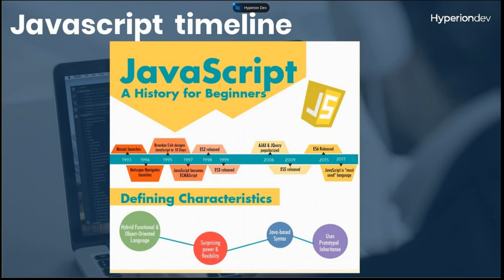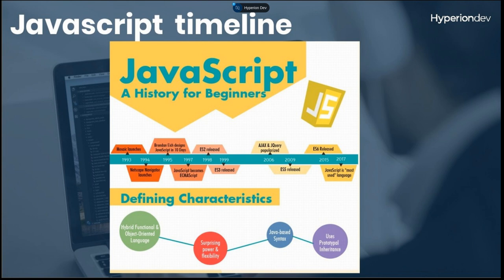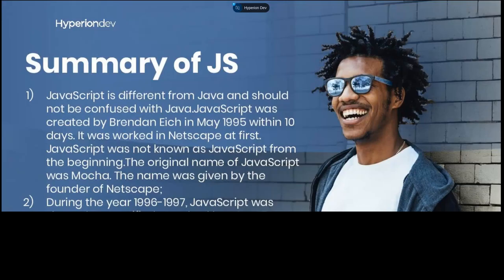They wanted to make changes to JavaScript because the internet was changing and new web technologies were coming out. In 2015, most of the changes they had been working on were released — named ES6, or JavaScript 2015. Think of this as modern JavaScript. From then onwards they've constantly been making updates: ES7, ES8, ES9, ES10 — JavaScript is always evolving.